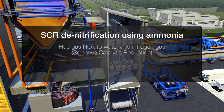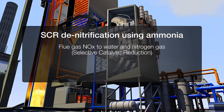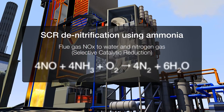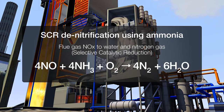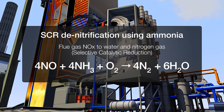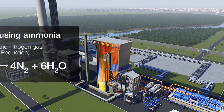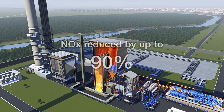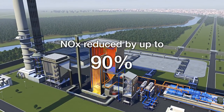As the NOx passes through, it is converted into water and nitrogen. These plants are highly efficient, achieving a removal rate of around 90%.